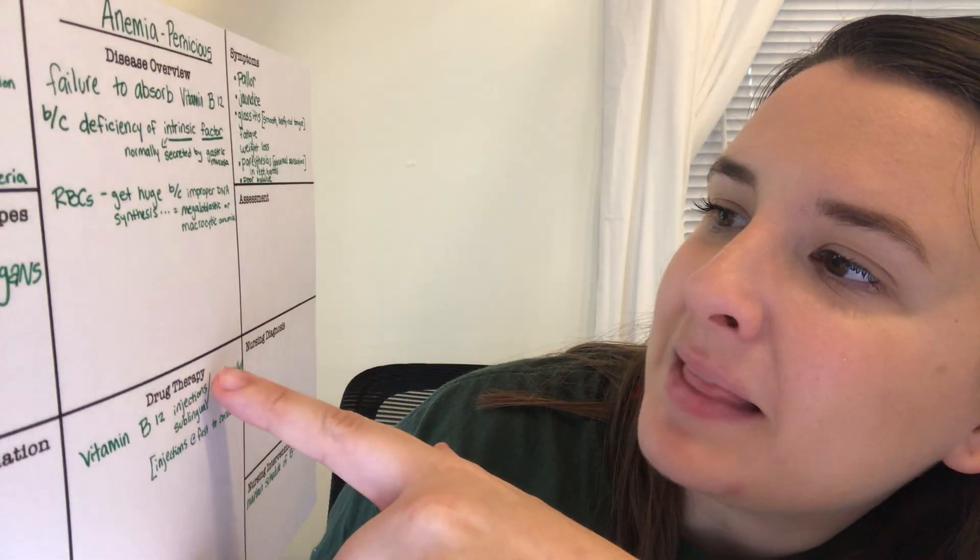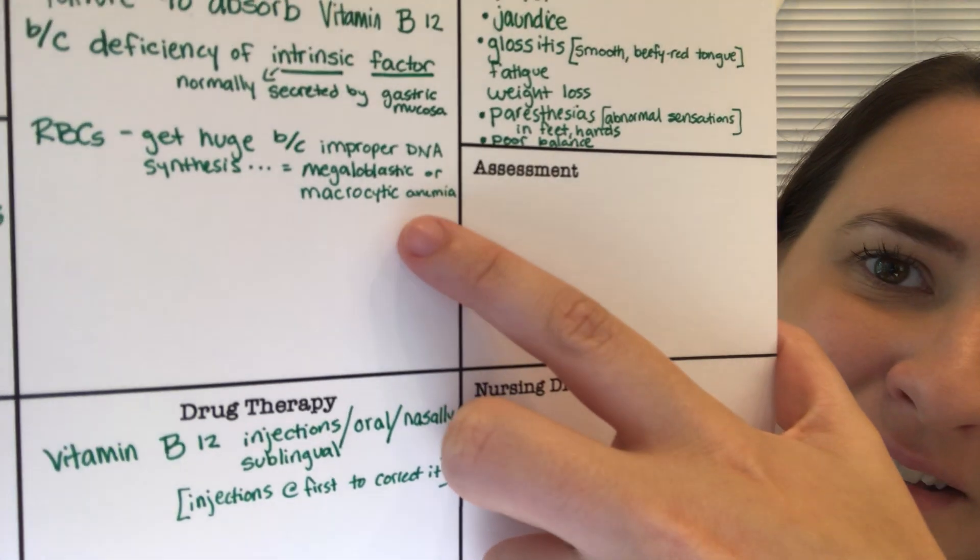In pernicious anemia, because of improper DNA synthesis, red blood cells become very large — this is called megaloblastic or macrocytic anemia. Risk factors include patients who have had a partial gastrectomy (partial stomach removal), malabsorption, chronic diarrhea, and it typically occurs in patients between ages 50 and 80. It can also result from an inherited genetic mutation, a diet lacking dairy, or conditions like diverticula, tapeworms, or overgrowth of GI bacteria.